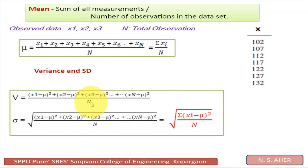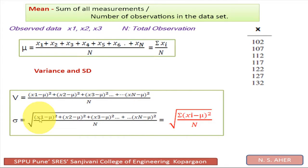Standard deviation σ is equal to the square root of the summation of (xi − μ)² upon N, which equals the square root of the summation of (x1 − μ)² + (x2 − μ)² + ... upon capital N.